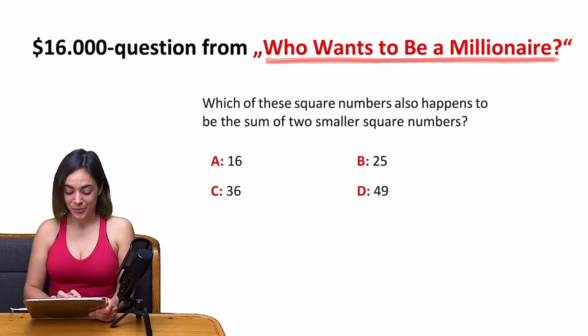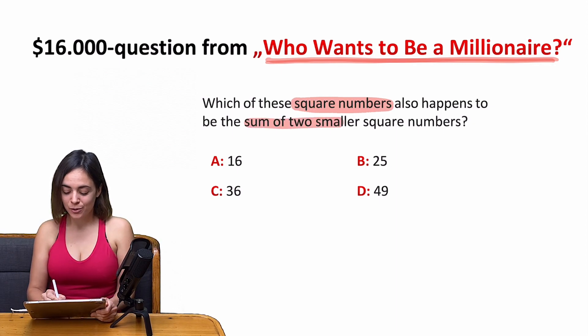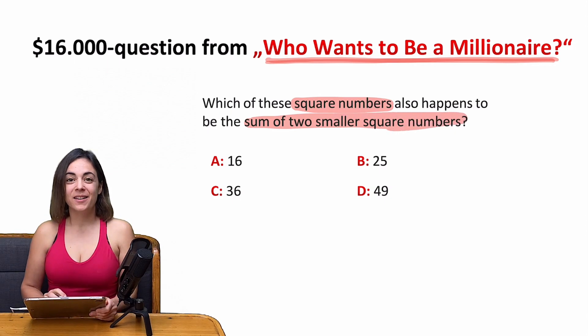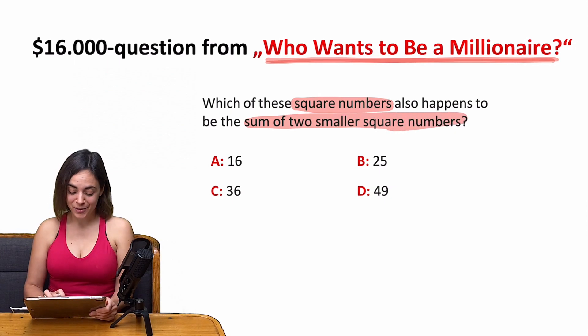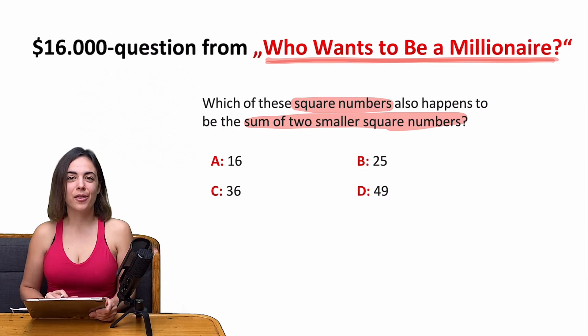The question was: which of these square numbers also happens to be the sum of two smaller square numbers? Is it A, the 16; B, the 25; C, the 36; or D, the 49?